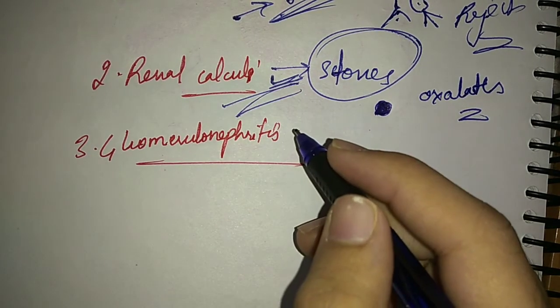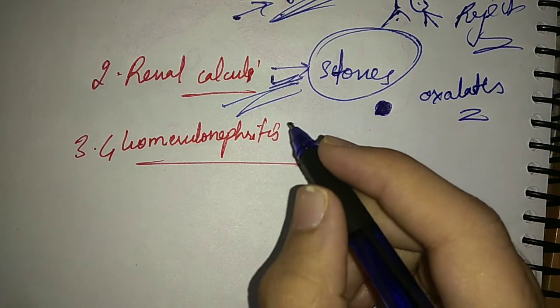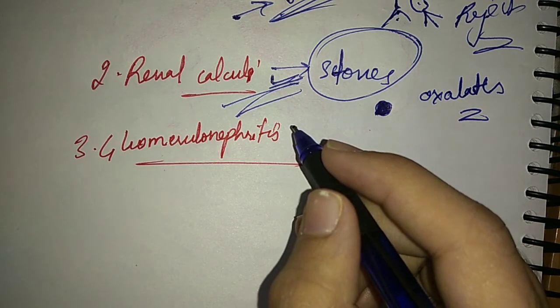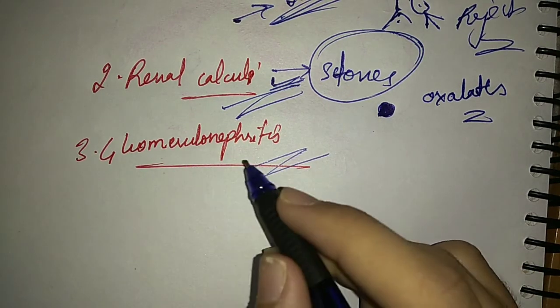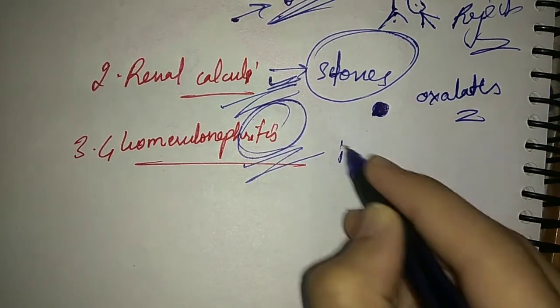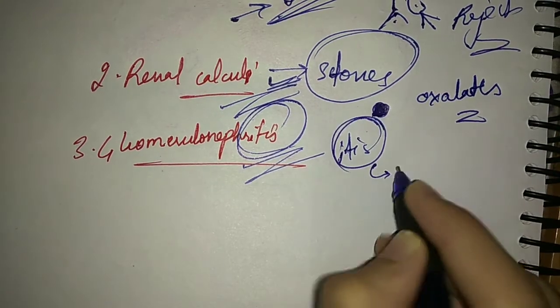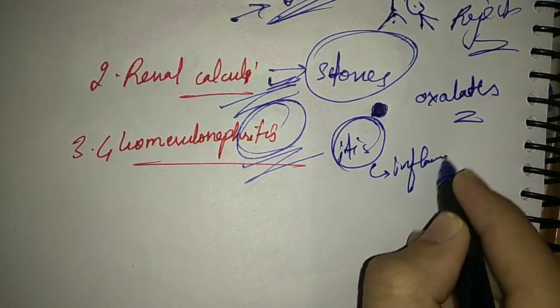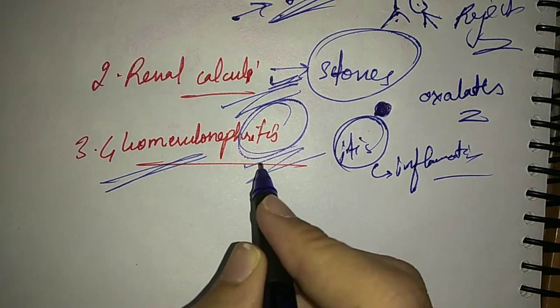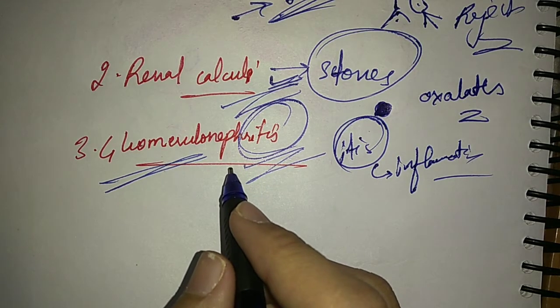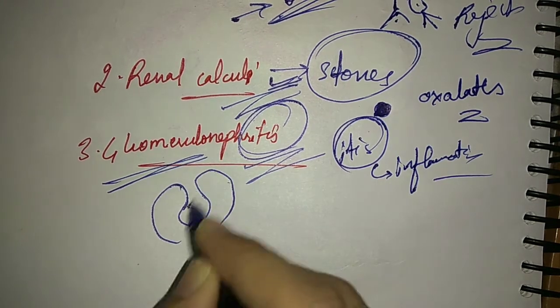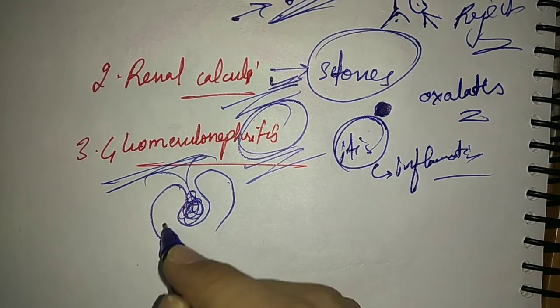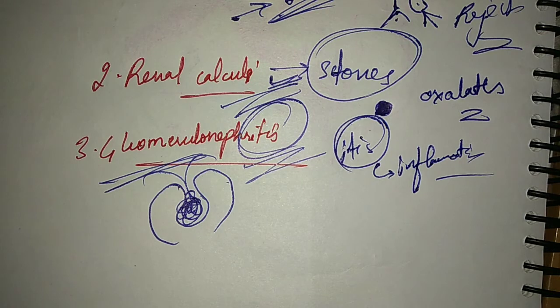Then the third disorder of the excretory system is glomerulonephritis. The word 'itis' means inflammation. So glomerulonephritis means inflammation of the glomerulus, which is a part present in the nephron, the network of capillaries. Its inflammation is glomerulonephritis.